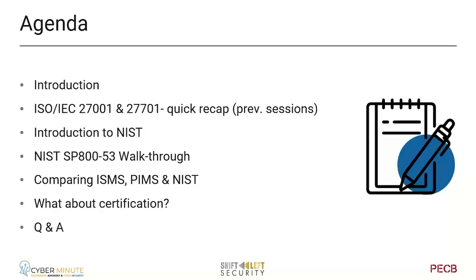After the quick recap, we will introduce you to NIST — it's a bit of a special one, not like the ISO. We will explain the SP 800 series, specifically the 53 documents, because it closely maps to the 27701. After that, we will compare the ISMS, PIMS, and the NIST documents, and how you can use them depending on what you want to achieve. We also regularly get questions about certification and how it works for NIST — that's part of today's session. And when time permits, we'll take care of some Q&A.